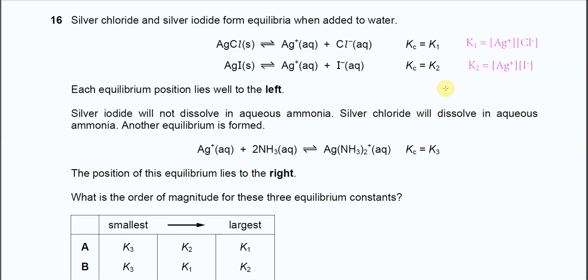Question 16: This is the equilibrium between the silver halide with its ions. The first equilibrium is the silver chloride with KC equal to K1, and the second equilibrium is the silver iodide with its ions, which is K2.